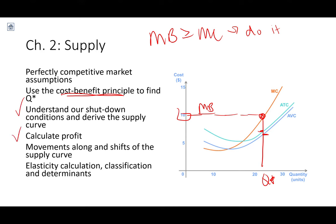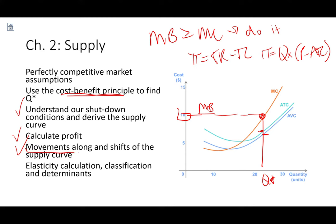Profit can be calculated two ways: in aggregate as total revenue minus total cost, or on a per unit basis as quantity times the difference between your price and your average total cost. Things that shift our supply curve are things that affect our marginal cost of production. Remember, your supply curve is your marginal cost curve. Then we introduced elasticity — responsiveness of quantity to changes in price. The formula was P over Q times 1 over our slope.